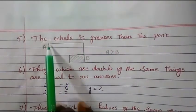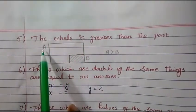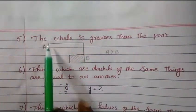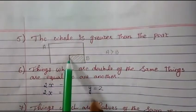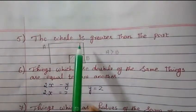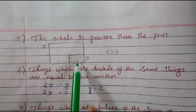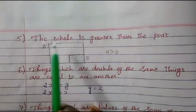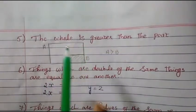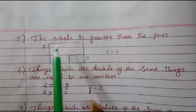For example, consider this big rectangle — this is A, so this is the whole big rectangle. The small rectangle B is part of this big rectangle. So rectangle A will be greater than rectangle B, because B is part of the whole rectangle. The whole is greater than the part.